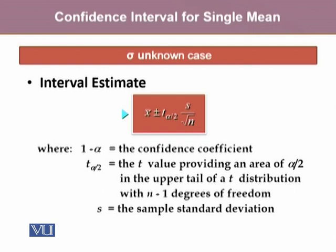The interval estimate when sigma is unknown is given as x-bar, which is the point estimate, plus or minus t(α/2), which is the reliability coefficient, and S divided by the square root of n, which is the standard error of x-bar. Here, 1 minus alpha is the confidence coefficient, t(α/2) is the t value providing an area of alpha by 2 in the upper tail of the t distribution with n minus 1 degrees of freedom, and S is the sample standard deviation.